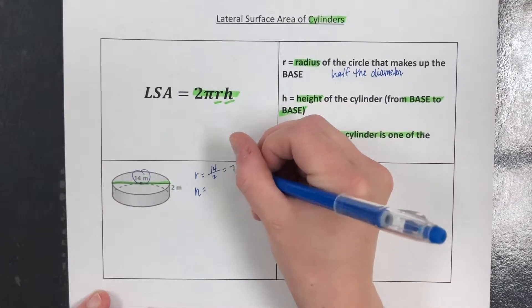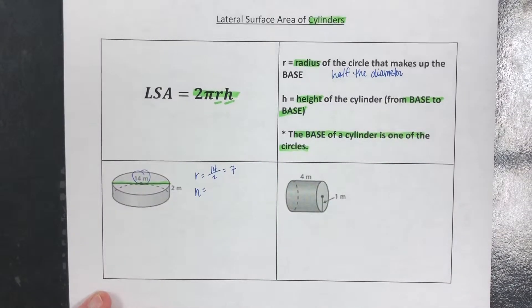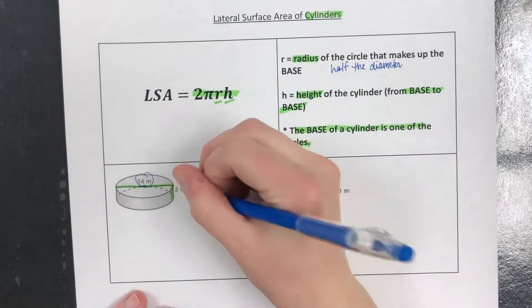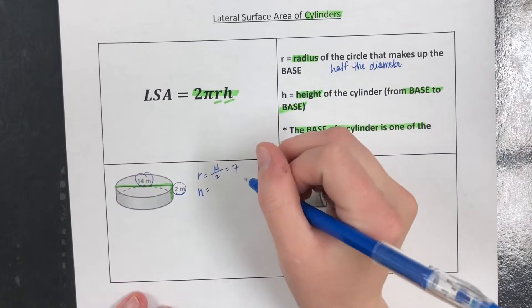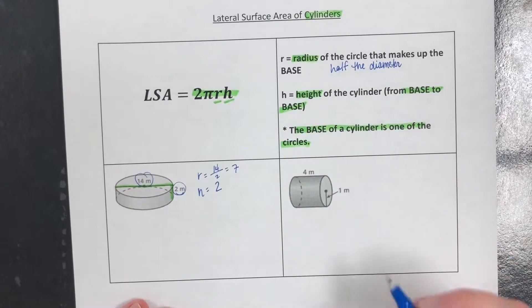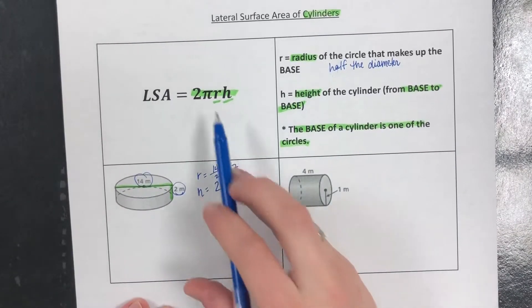So we take 14, we divide it by 2, that means we have a radius of 7, and then the height of the cylinder from base to base is 2, so from circle to circle, 2 meters.